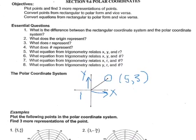Back to our essential questions: what is the difference between the rectangular coordinate system and the polar coordinate system? A rectangular coordinate system is represented by (x, y). The polar coordinate system uses r for the radius and theta for the angle — r and theta. Theta is represented as a radian.